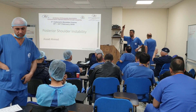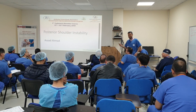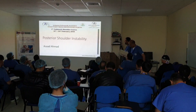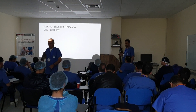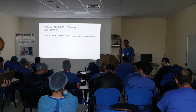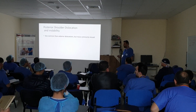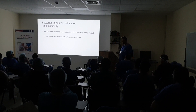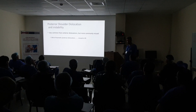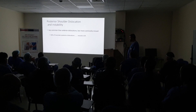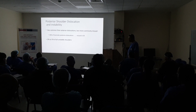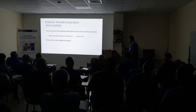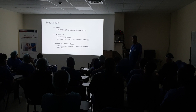Exterior shoulder dislocation stability — this is a difficult subject to simplify. Exterior shoulder dislocation is less common than anterior dislocation, but it is very important. Fifty percent of traumatic posterior dislocations are missed. Only 2 to 5% of all unstable shoulders are posterior dislocated, so it is much less common than anterior dislocation.